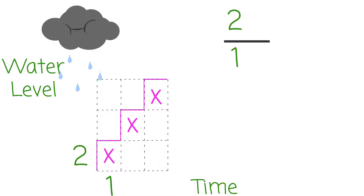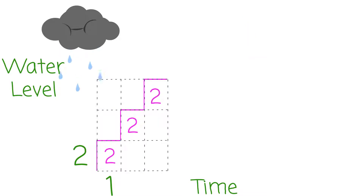Now to find the unit rate, just simplify the ratio, which gives us a unit rate of 2. So if it rains for 2 hours, the lake will rise 4 inches. If it rains for 3 hours, the lake will rise 6 inches. Proportional numbers always increase or decrease by the same ratio.